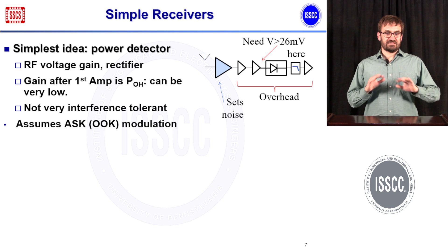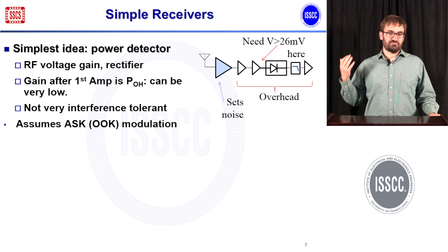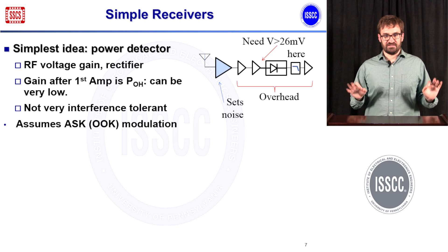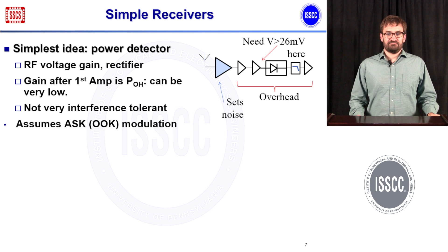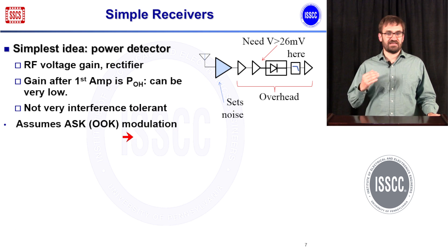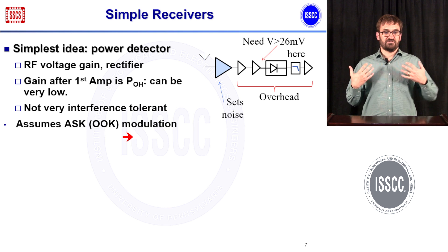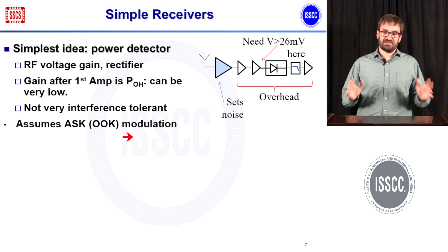On the receiver side, the simplest approach is a rectifier preceded by amplification, which is very good for demodulating on-off or amplitude keyed signals at low power. Power consumption is set by just the first amplifier stage, which sets the noise floor; after that, voltage gain is relatively cheap with low overhead. The main problem is that you're also demodulating any interference present, so interference tolerance is very poor — even a modest LC filter out front doesn't help much.